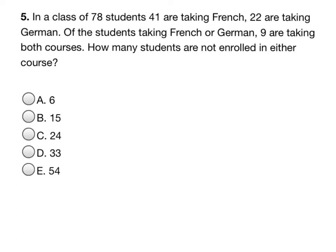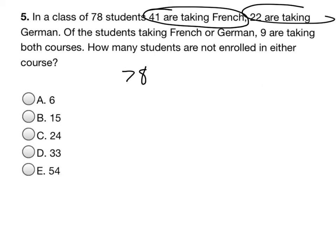Okay, this is just essentially deductive reasoning. You're just going to use logic and the information you have to solve this. So we've got 78 kids. We know 41 are taking French, 22 are taking German. So that totals up to 63.